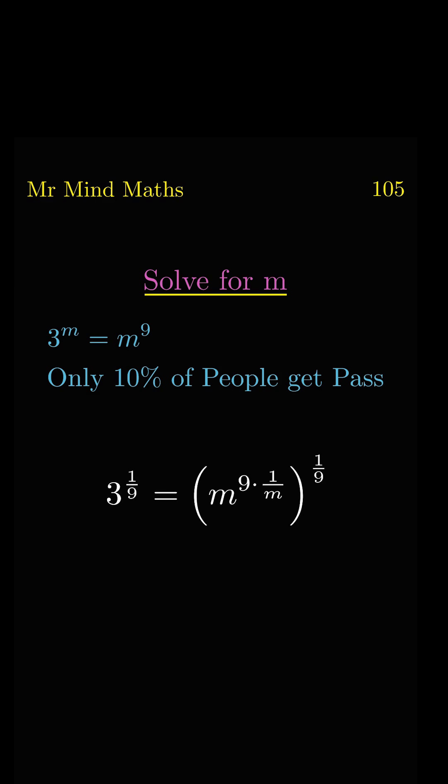Finally, we will get m power 1 over m equal to 3 power 1 over 9. On the right-hand side with the power, we will multiply and divide by 3.